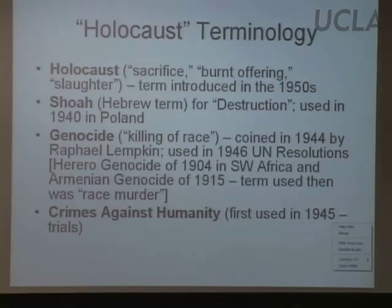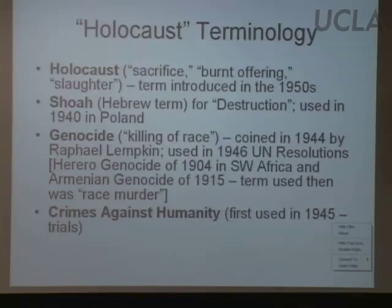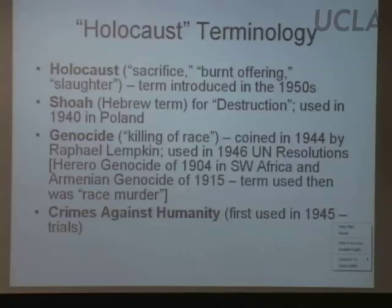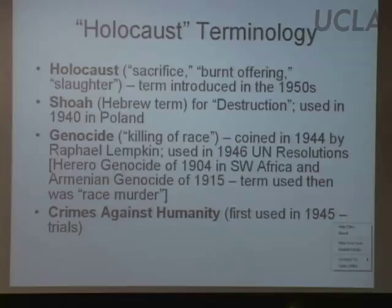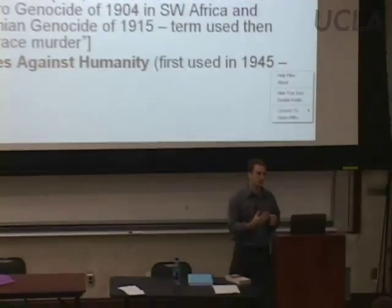There were other genocides in the 20th century prior to the Holocaust — in particular the Armenian genocide in 1915, perpetrated by the Ottoman Empire, the Turkish majority, a Muslim majority, against its Christian Armenian citizens. This is considered the first modern genocide because people were essentially deported using railways and killed or starved in mass in a very short period of time. During the 20th century you had an acceleration of the means to carry out genocide and a systematic approach to doing so.